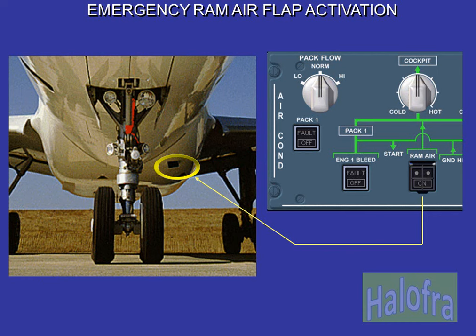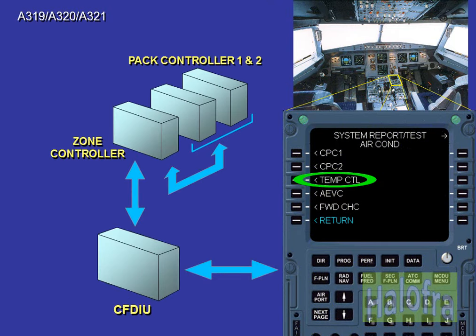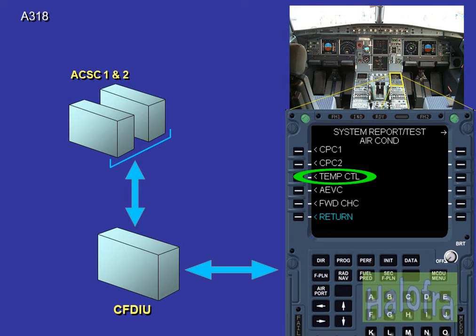The aircraft must descend to less than 10,000 feet and cabin differential pressure should be less than 1 psi. When these conditions are met, the outflow valve will half open. The zone controller is the interface between the pack controllers and the CFDIU for test purposes and fault reporting available on the MCDUs. The two ACSCs are also connected to the CFDIU for test purposes and fault reporting available on the MCDUs.